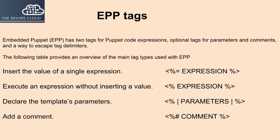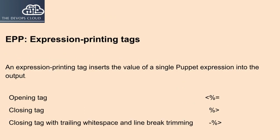Embedded Puppet, EPP, has two tags for Puppet code expressions, optional tags for parameters and comments, and a way to escape tag delimiters. The following table provides an overview of the main tag types used with EPP. To insert the value of a single expression, use the opening tag <%=  expression  %>. To execute an expression without inserting a value, use <%  expression  %>. To declare the template's parameters, use <%|  parameters  |%>. You can also add a comment. An expression printing tag inserts the value of a single Puppet expression into the output. The closing tag with trailing whitespace and line break trimming uses -%>.